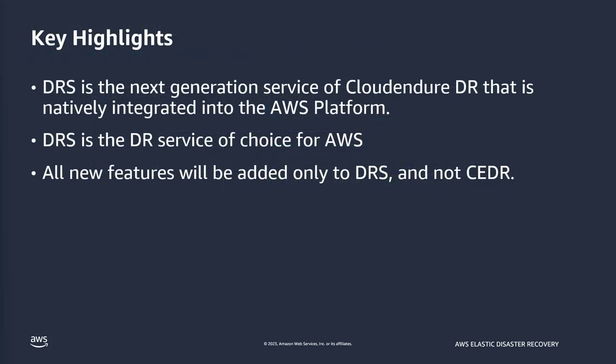DRS is the next generation of CloudEndure DR and it's natively integrated with the AWS platform. Any services that AWS provides will have better integration over time. Currently we have integration with CloudTrail, CloudWatch, and CloudWatch Events, with more integrations coming in the future. DRS is the DR service of choice for going to AWS, and all new features will only be added to DRS — not CloudEndure DR. We'll talk about some of those new features that have already been released and are not currently available in CloudEndure.